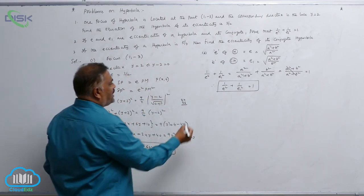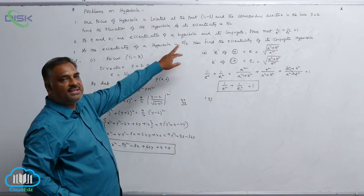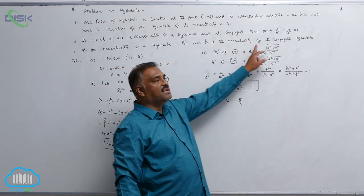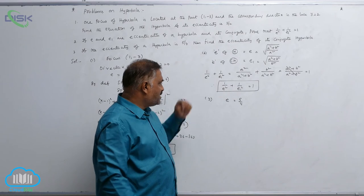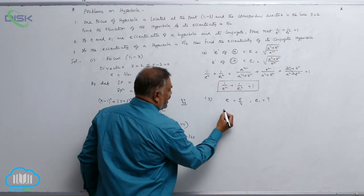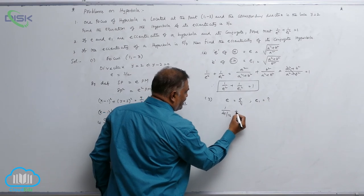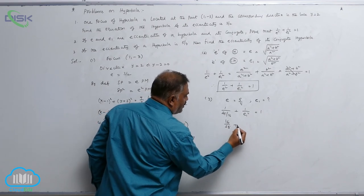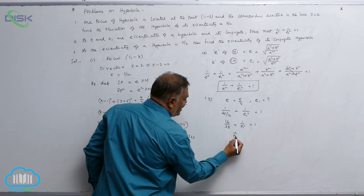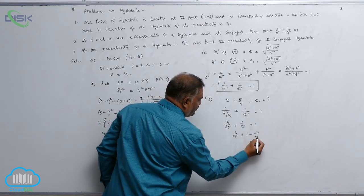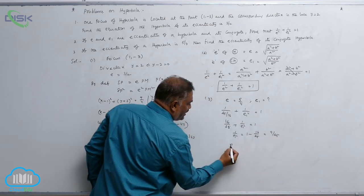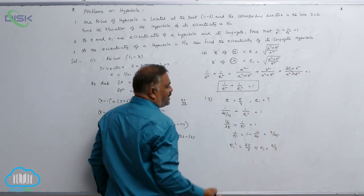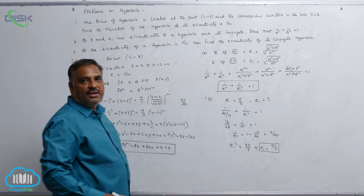Third problem: the eccentricity of a hyperbola is e = 5/4. We need to find the eccentricity of its conjugate hyperbola using the result 1/e² + 1/e₁² = 1. So 1/(25/16) + 1/e₁² = 1, giving 16/25 + 1/e₁² = 1, so 1/e₁² = 9/25. Therefore e₁² = 25/9, which means e₁ = 5/3. This is the eccentricity of the conjugate hyperbola.